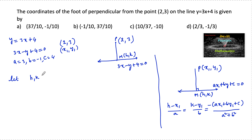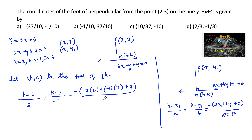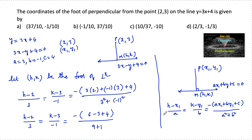So we have the relation: (h - x1), that is (h - 2), upon a = 3, is equal to (k - y1), that is (k - 3), upon b = -1, is equal to minus of (ax1 + by1 + c), that is -(3×2 + (-1)×3 + 4), upon a² + b², that is 3² + (-1)².